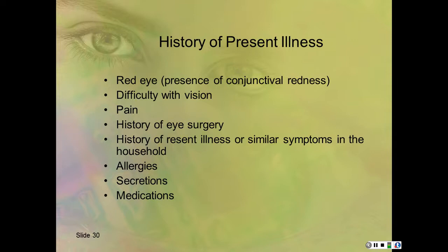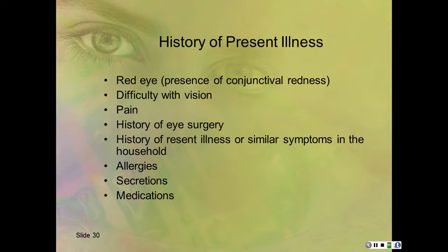The easiest way to get secretions out of eyes, especially on babies, is when the secretions mat the eyes shut in the morning. Most people put a warm washcloth on it, but if you add some baby shampoo to that warm washcloth, you'll be able to debride the eyes simply without being as hard on the eyelids and eyelashes. And it doesn't hurt the eye at all if the shampoo gets in.